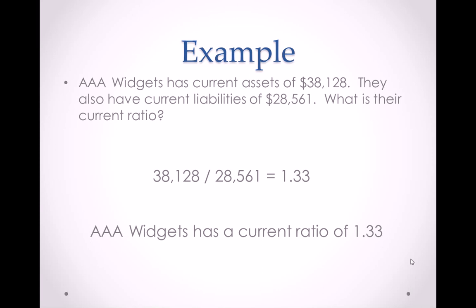To solve this problem, we simply take their current assets, which are $38,128, and divide that by the current liabilities of $28,561. When we do that calculation, we find that the current ratio is 1.33.